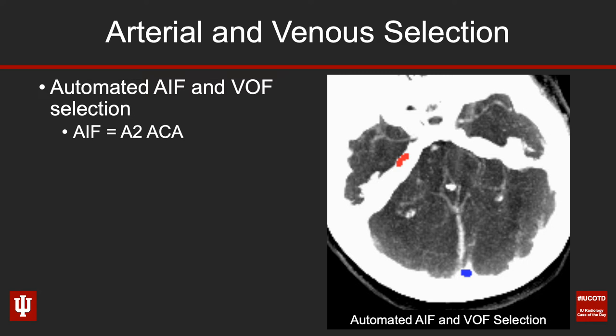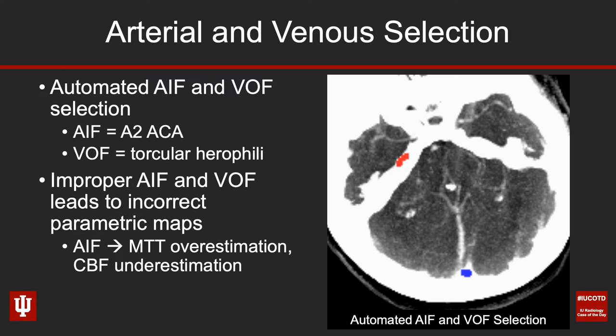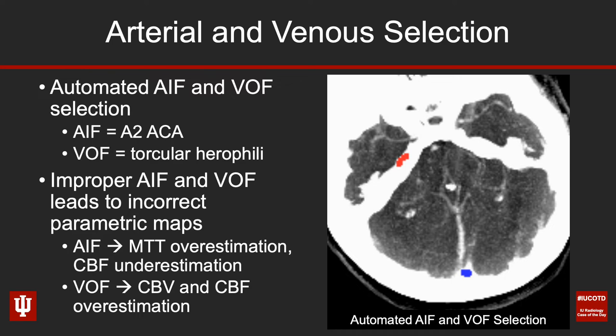Next, look at your arterial and venous selection. The software typically automatically selects your arterial input function (AIF) and venous outflow function (VOF) — usually the A2 ACA for the AIF and the torcular herophili for the VOF. If you have the improper AIF or VOF selected, it's going to mess up your parametric maps. In this case, the VOF looks okay but it selected the right petrous apex as the AIF, which won't give an accurate perfusion assessment. With the wrong AIF, you often get overestimation of mean transit time and underestimation of cerebral blood flow; with the wrong VOF, you may get overestimation of cerebral blood volume and cerebral blood flow.